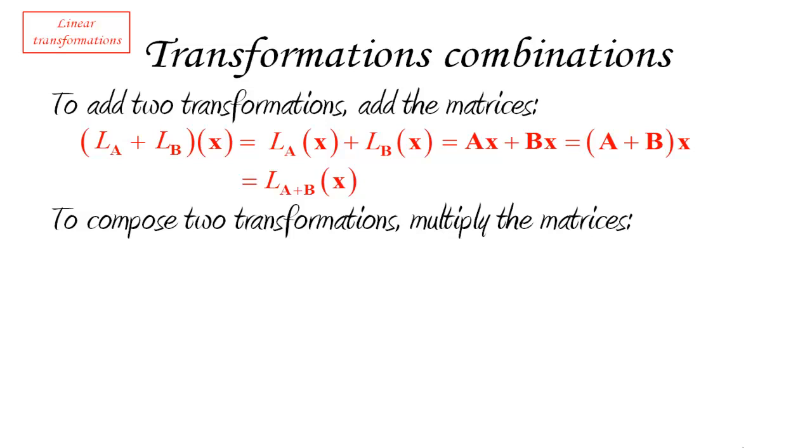And it turns out that what we need to do in order to obtain that is multiply the matrices according to the regular multiplication rules for matrices. What does that mean? Okay, so let's say that we have two linear transformations, LA and LB, and we want to compose them. What does that mean?